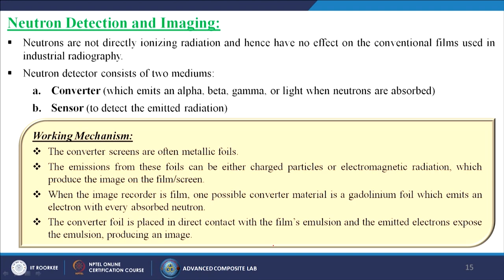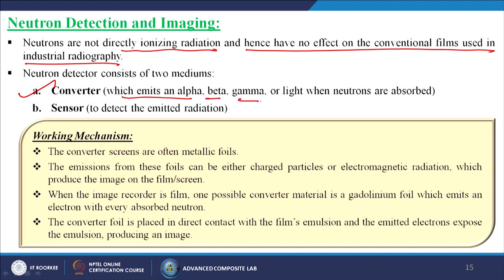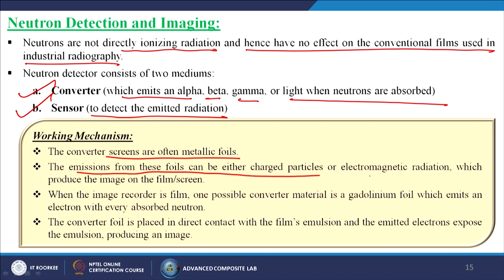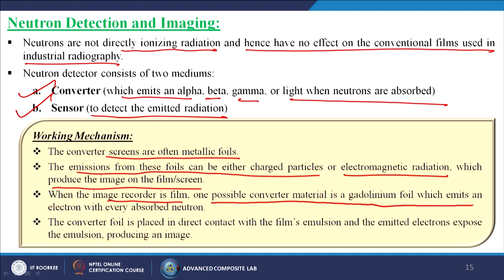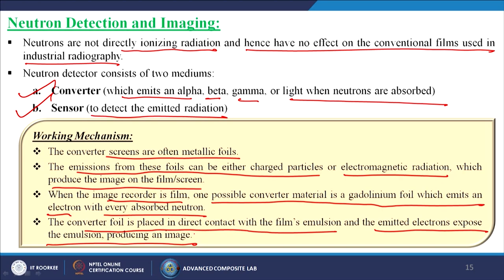Neutrons are not directly ionizing radiation and hence have no effect on conventional films used in industrial radiography. A neutron detector consists of two mediums: a converter which emits alpha, beta, gamma, or light when neutrons are absorbed, and a sensor to detect the emitted radiation. Converter screens are often metallic foils whose emissions — either charged particles or electromagnetic radiation — produce the image on the film or screen. When the image recorder is film, one possible converter material is a gadolinium foil which emits an electron with every absorbed neutron; the foil is placed in direct contact with the film emulsion.